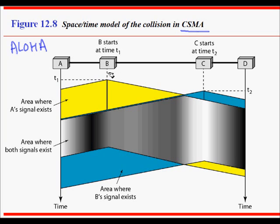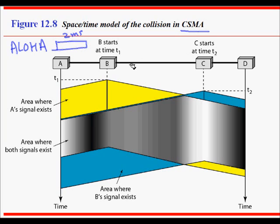If A starts to send a frame which takes, say, two milliseconds, A starts transmission and during that time if B, C, or D starts transmitting there will be a collision and both frames will be destroyed. Because no one senses the medium there is a lot of collision and your throughput decreases. The problem with Aloha is that throughput is really low.